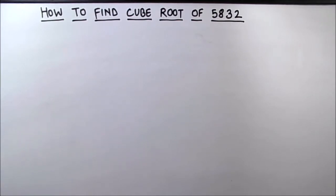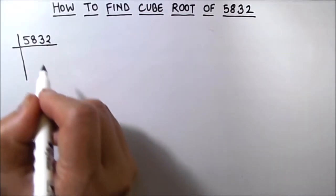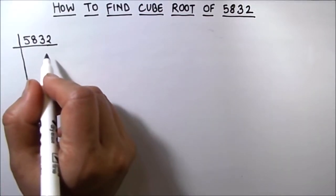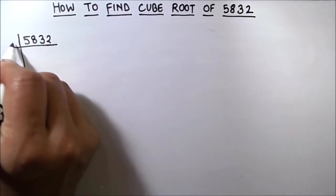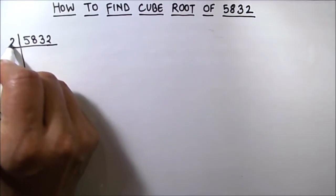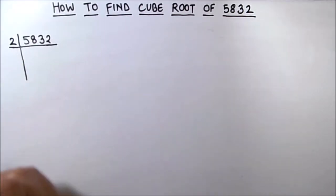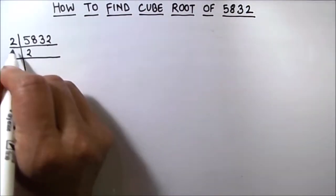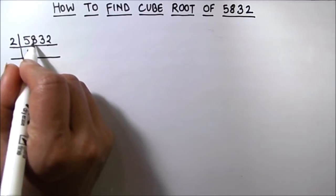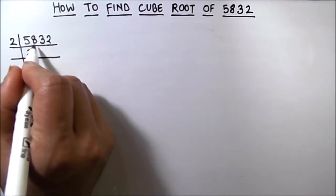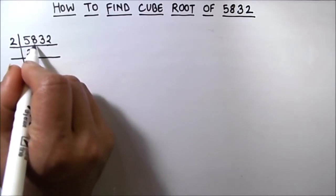So let's start by dividing 5832. As this is an even number, we can use 2, which is the minimum prime number, to divide this number. 2 times 2 is 4, 1 will be carried over to the next digit. This becomes 18.